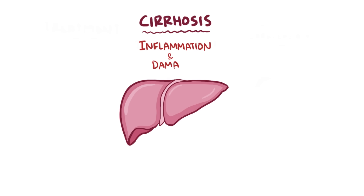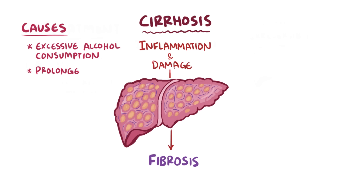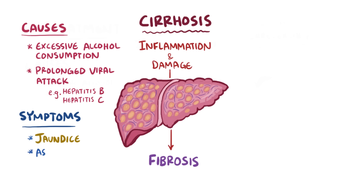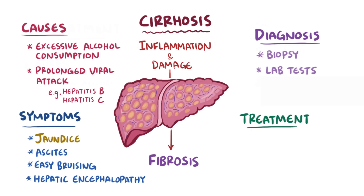Cirrhosis is when inflammation and liver damage causes the liver to become fibrotic and develop scar tissue. Causes include excessive alcohol consumption or prolonged viral attack like from hepatitis B or hepatitis C. Over time, as the liver becomes less functional, symptoms like jaundice, ascites, easy bruising, and hepatic encephalopathy develop. Diagnosis is often done with a biopsy or through lab tests, and treatment for advanced cirrhosis involves treating the underlying cause, but sometimes a liver transplant is required.